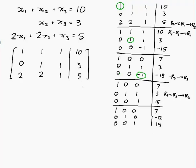Now the next bit of the question says to find all solutions of this system. Let's translate this back to equations. The first row of my reduced row echelon form says x1 equals 7. The second row says x2 equals minus 12. And the third row tells me that x3 is 15.